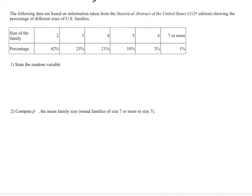The first question is state the random variable. Remember the random variable is what you're measuring, an idea of what you're interested in. In this case, we're interested in the size of the family, so the random variable would be the size of the family.